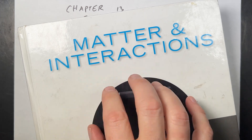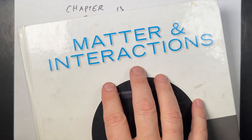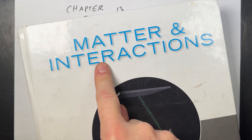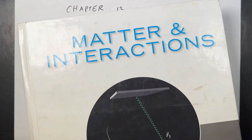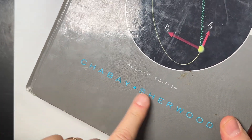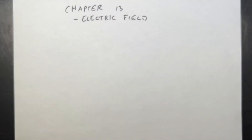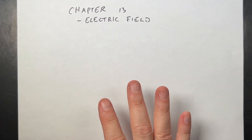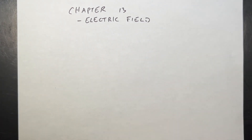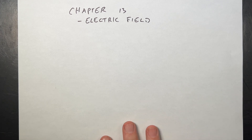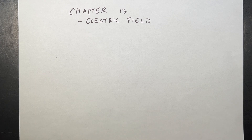Starting a new series — I am going to be doing chapter summaries from this textbook, Matter and Interactions by Chabay and Sherwood. It's a great introductory physics book. I'm going to give chapter summaries, so you probably should still read the book. I might miss some things, but I'm going to get the key things in here. Let's go ahead and get started.